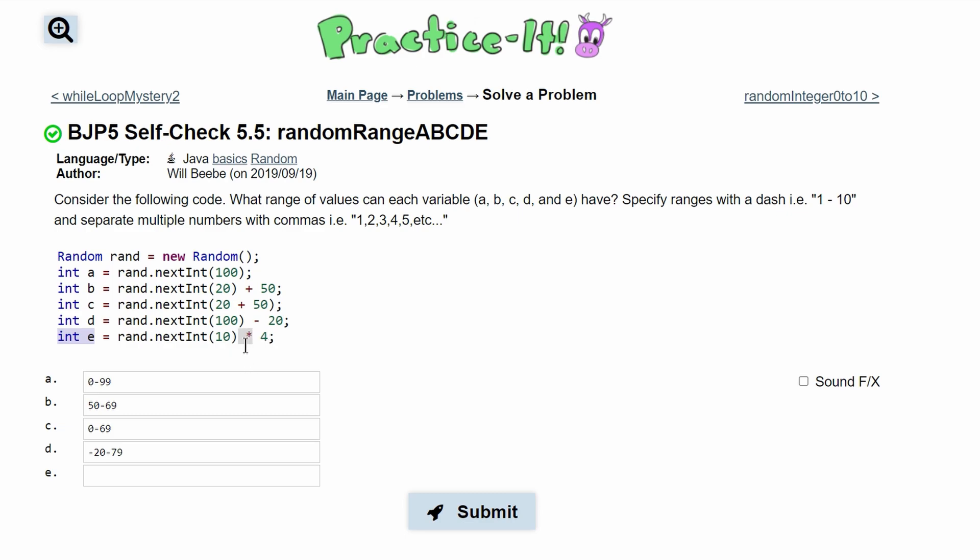However, since it's multiplication, it's a little bit different than this plus. We're going to start at zero and we are going to go to 40 because we have 4 times 10. But again, since 10 is in here, we're not going to touch it.